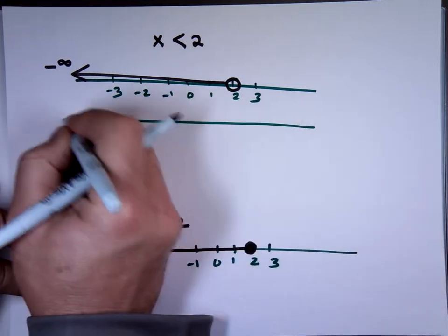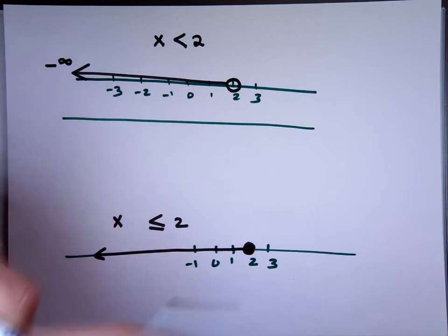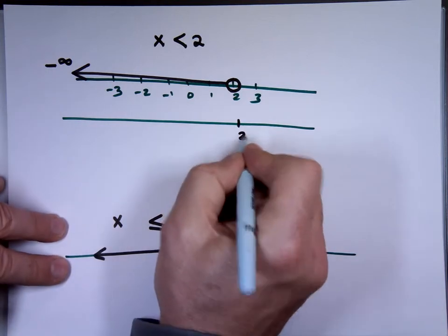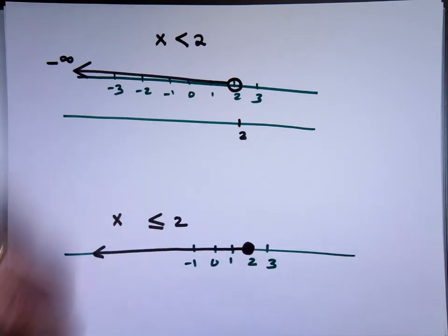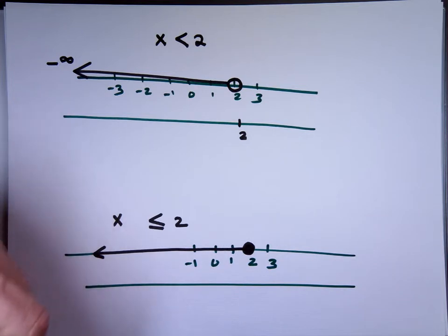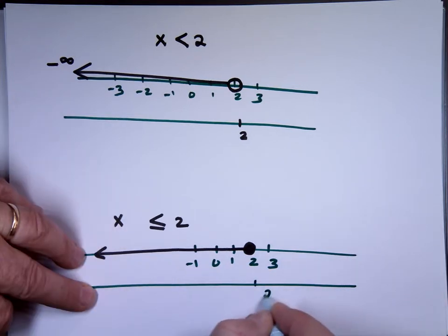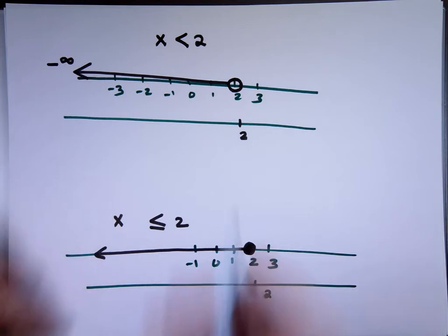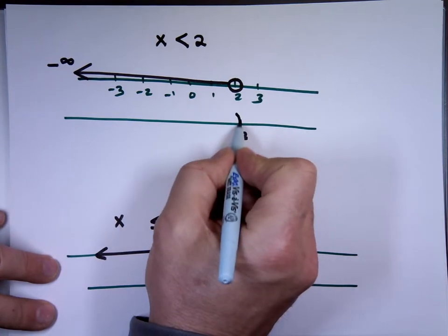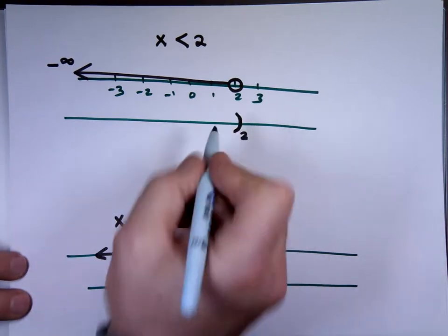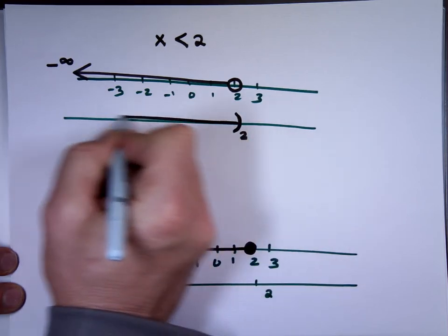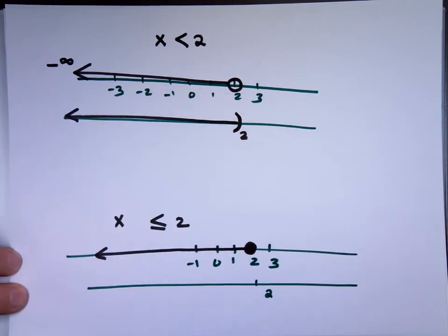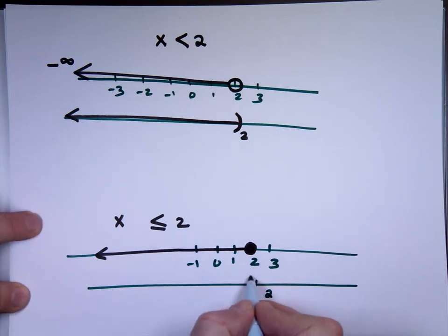Now, we're using a new notation. The new notation that everyone uses, this is the 2 here. Instead of open, closed circle, we use parentheses and square brackets. So, since the 2 is not included, we use parentheses. Parentheses means not included. The 2 is included, we use a square bracket. Square bracket means it's included.